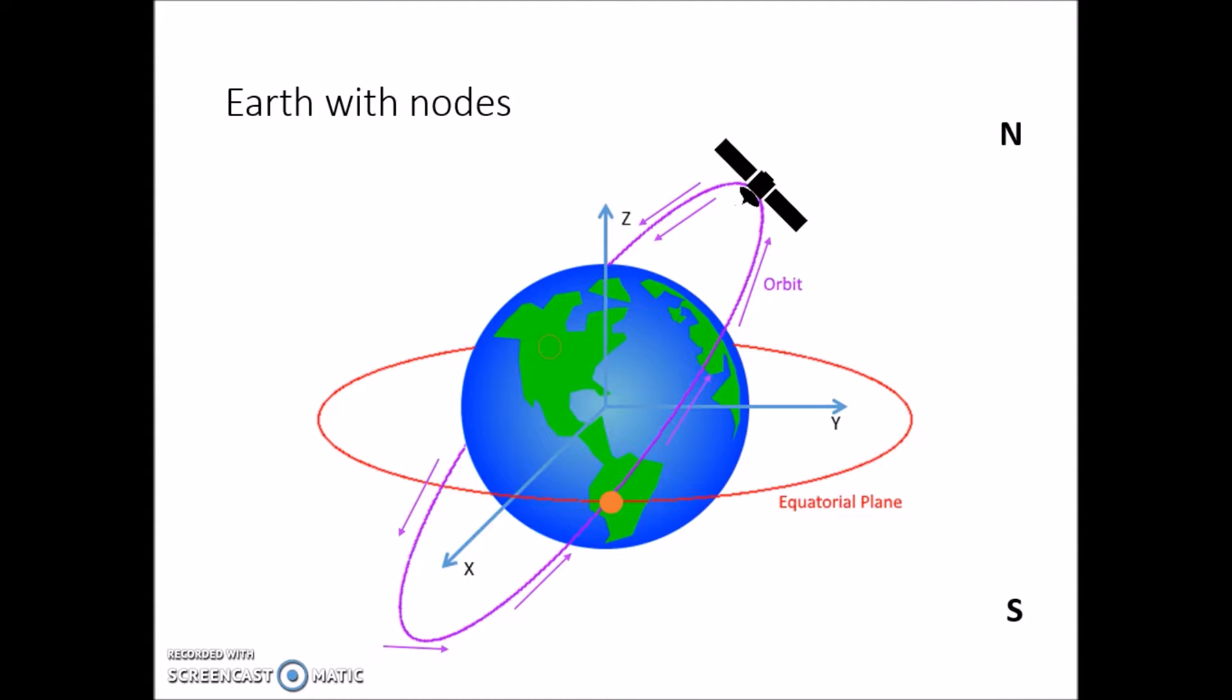As the orbit crosses the equatorial plane, moving from south to north, it creates the ascending node. As it crosses from north to south, it creates the descending node. The line connecting the nodes is called the nodal line.